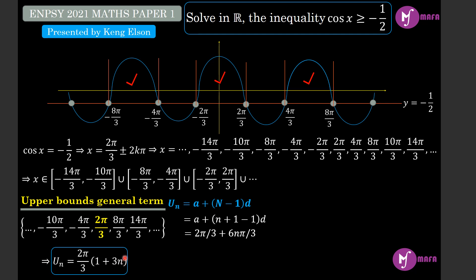We verify: when n equals zero, the term is 2π/3 — our first positive upper bound. When n equals 1, we get (3 plus 1) times 2π/3 which is 8π/3 — the next upper bound. For negative upper bounds, when n is negative 1, we get (1 minus 3) times 2π/3 equals negative 4π/3, which is indeed a negative upper bound. Now let's get the general formula for the lower bounds.